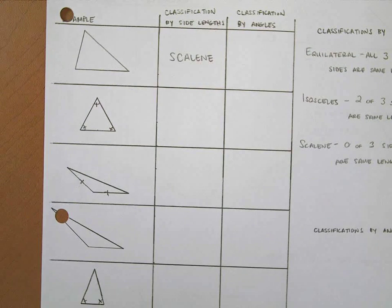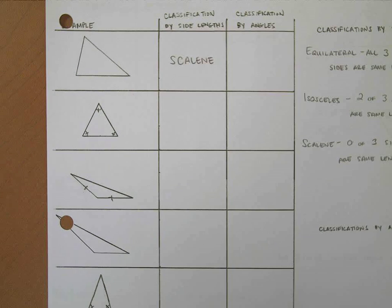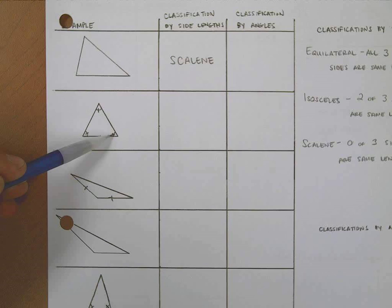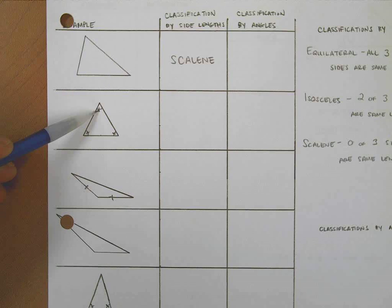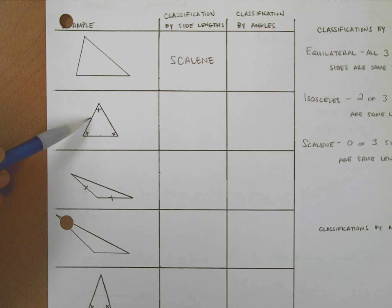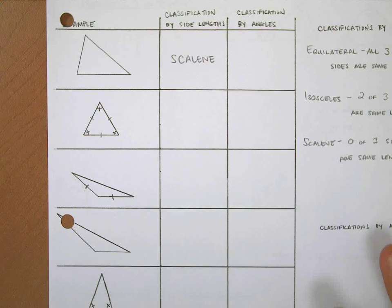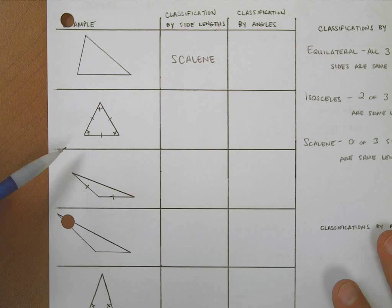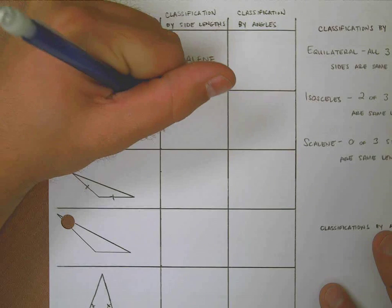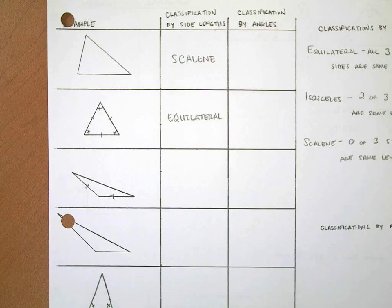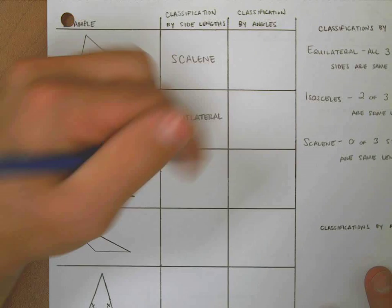Over here, this is interesting — we might need to know the hinge theorem, which will come up later in our class. If this angle and this angle are the same, then based on what's called the hinge theorem — H-I-N-G-E — the sides across from them are also the same. So even though there are no tick marks, we can place tick marks on those sides, and since all three angles are the same, all three sides are the same. Based on the hinge theorem, we can call this an equilateral triangle.